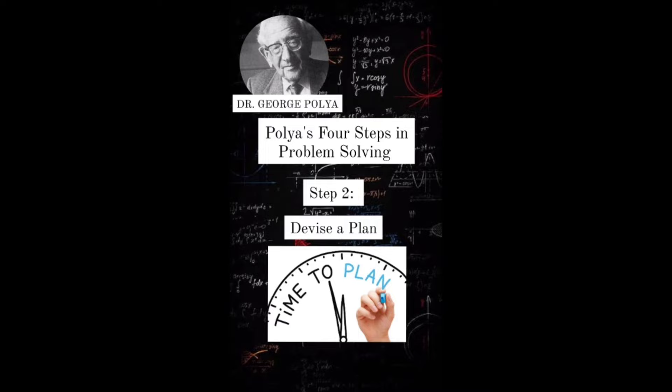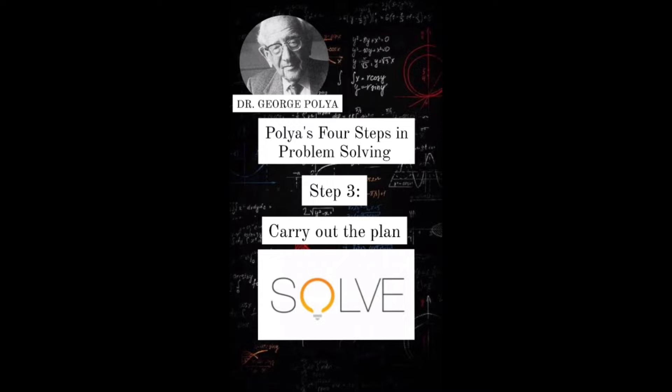Step 2: Devise a plan. This phase is making a plan to solve the problem using the available information. Step 3: Carry out the plan. This is the part where you are going to solve.